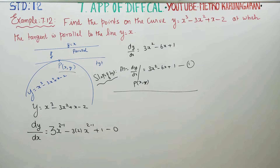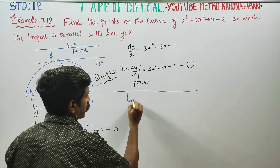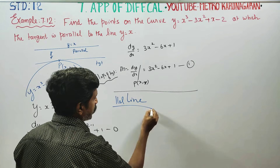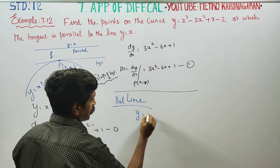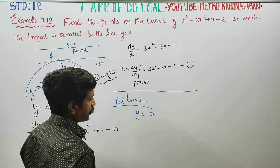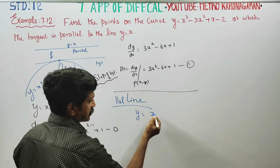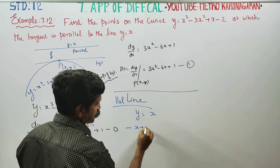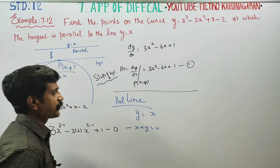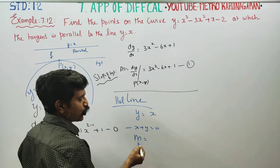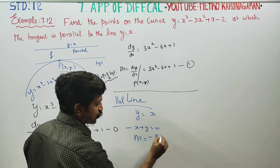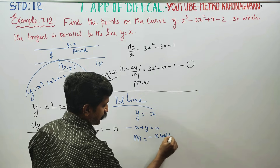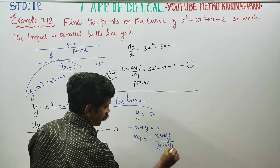Now for the parallel line: the given line is y equals x, which can be written as minus x plus y equals 0. The slope of the parallel line M equals the coefficient of x divided by the coefficient of y.